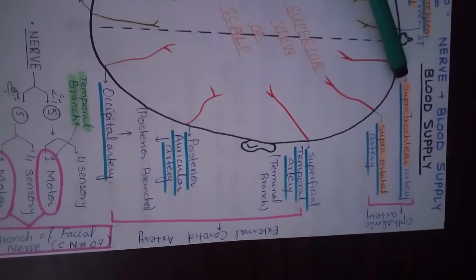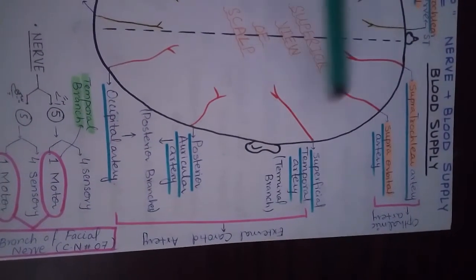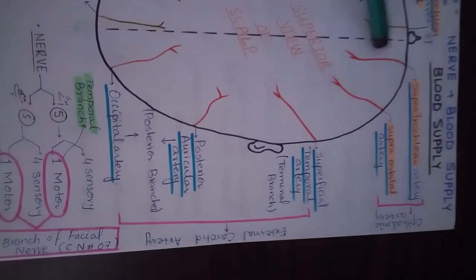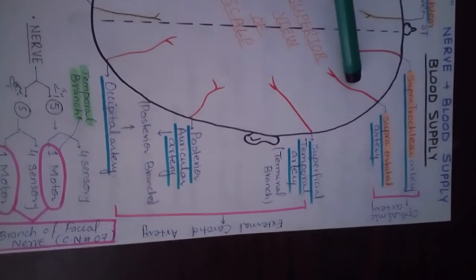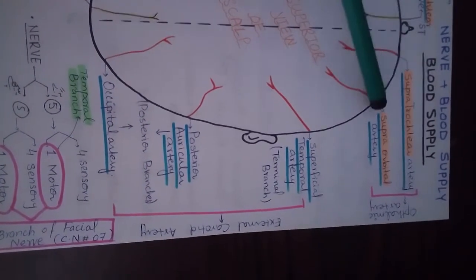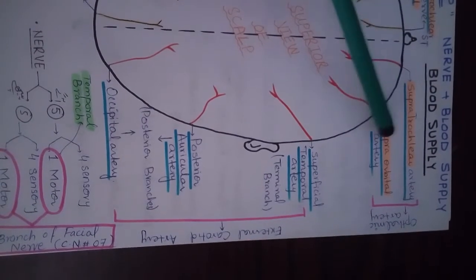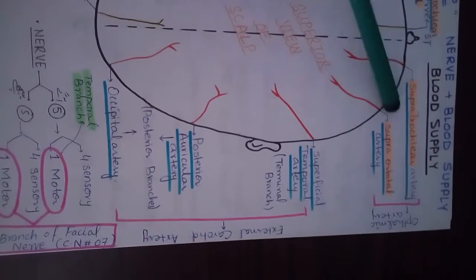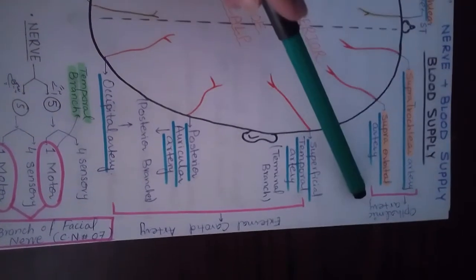Now let's name them. The first artery is the Supra-trochlear artery, and the second one is the Supra-orbital artery. You can see these two arteries. The main artery from which these arise is the ophthalmic artery.